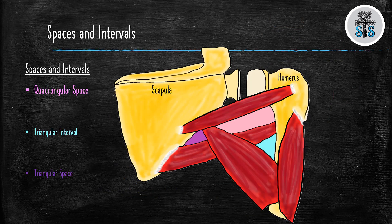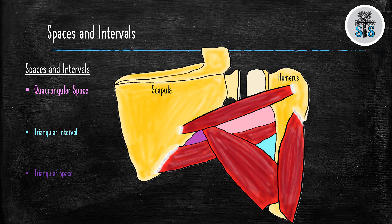Now, here's a basic anatomy slide, but it's great pimp fodder. Do you know the borders that make up the quadrangular space, the triangular interval, and the triangular space? Well, the borders of the quadrangular space is outlined by the teres minor, teres major, the long head of the triceps, and the humeral shaft. The triangular interval is going to be outlined by the teres major, long head of the triceps, and the humeral shaft. And lastly, the triangular space is going to be outlined by the teres minor, teres major, and long head of the triceps.